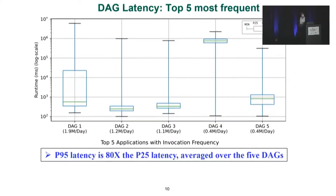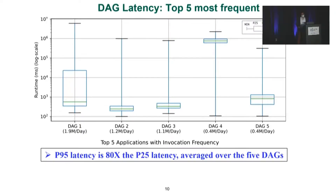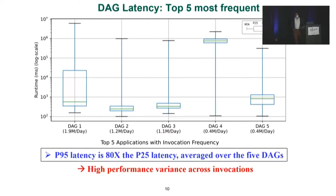We make three important observations from the workload characterization. The first is that even for the same DAG, we see a high variance in execution time. Here I'm showing the top five most frequent DAGs in the dataset with their runtime on the y-axis on a log scale. Even for the same DAG, there is high variance — specifically, the P95 latency is 80 times the median latency averaged over the five DAGs. Accordingly, there is high performance variance across invocations of the same application, and we need to mitigate that variance during optimization.